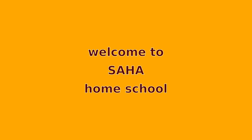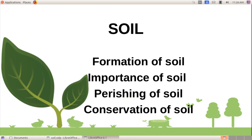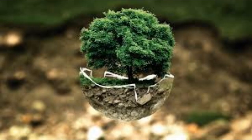In the last class we studied about rocks and weathering. Today we have to study about the formation, importance, perishing, and conservation of soil. Soil is the thin layer of material covering the earth's surface and is formed from the weathering of rocks. It is made up mainly of mineral particles, organic materials, air, water, and living organisms.